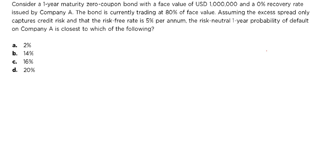Here we are asked to compute the risk-neutral probability of default. So they are saying that there is a 1-year maturity zero coupon bond face value of 1 million. The recovery rate is 0% which is issued by company A. The bond is currently trading as 80% of the face value. Assuming the face value is 100, so the bond is trading at 80% of the face value. So the bond price is 80.